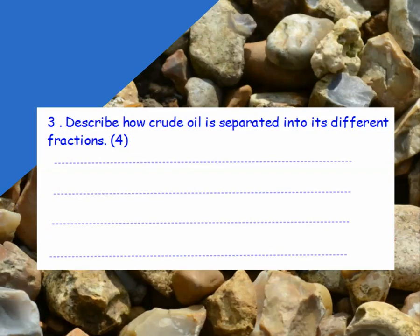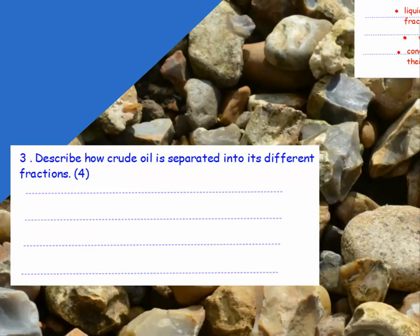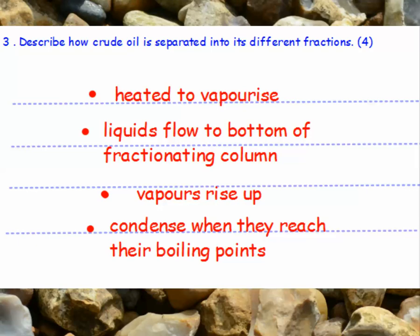Describe how crude oil is separated into its different fractions. Firstly, it's heated to vaporise it. The liquids flow to the bottom of the fractionating column. The vapours rise up and they condense when they reach their boiling points.